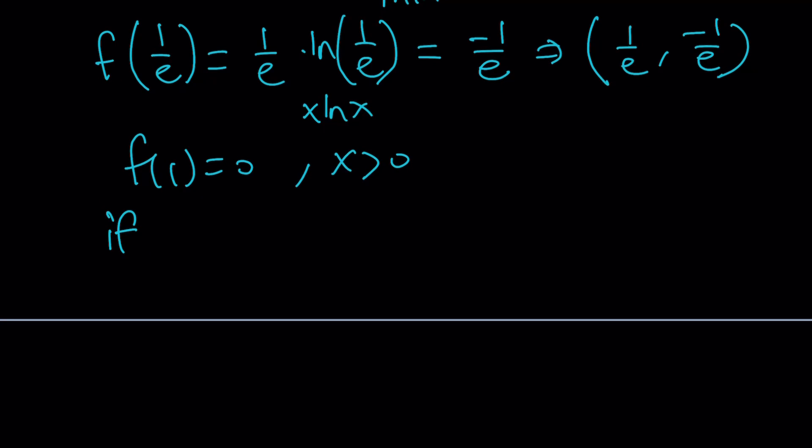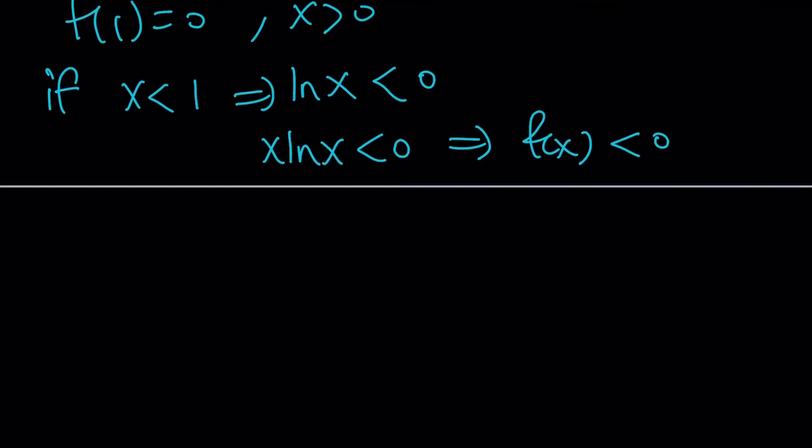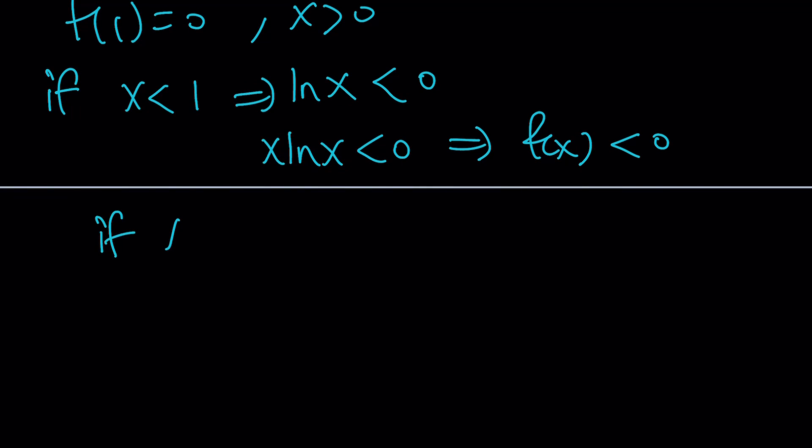So if x is less than 1, then ln x is going to be less than 0. You probably know that, right? And we also know that x is greater than 0. So x ln x is going to be less than 0, but x ln x is just f of x, which means f of x is less than 0. What's that supposed to mean? It means that if x is less than 1, then f of x is less than 0. If x is greater than 1, then f of x is greater than 0. I'm not talking about the derivative. I'm talking about the actual function f of x itself. Make sense?